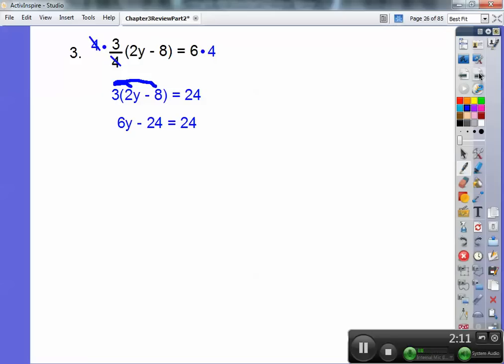Now we can just distribute that 3 through. So 3 times 2y is 6, 3 times 8 is 24. There's a minus there. We're going to add 24 to both sides and we get 48 over there. Then we divide by 6, and 6 into 48 is 8 times, we get y equals 8.